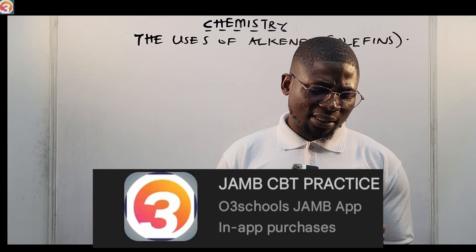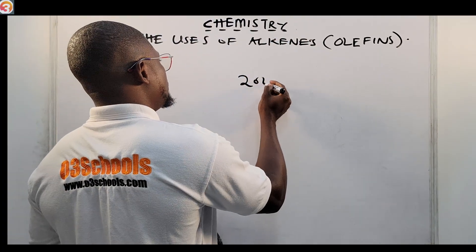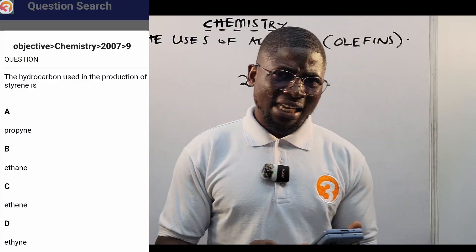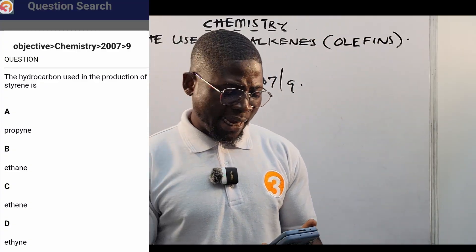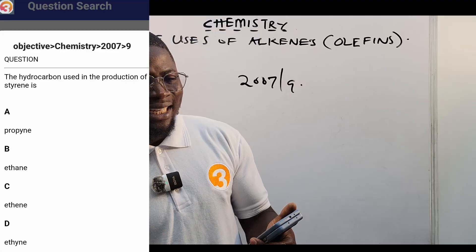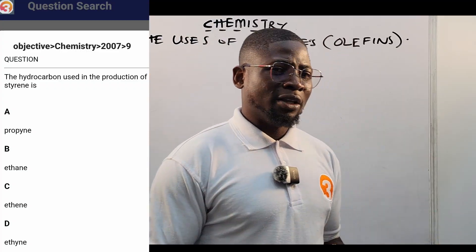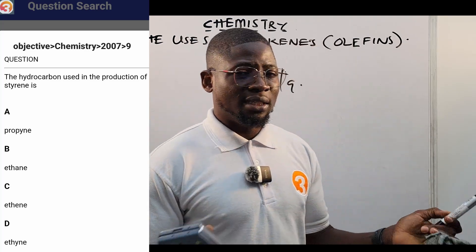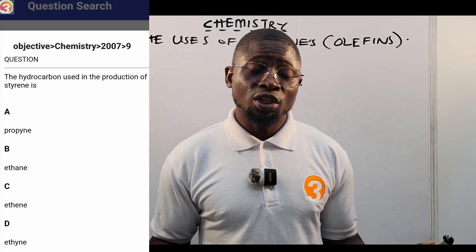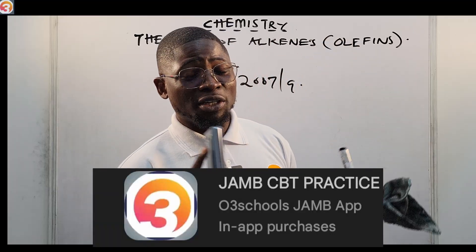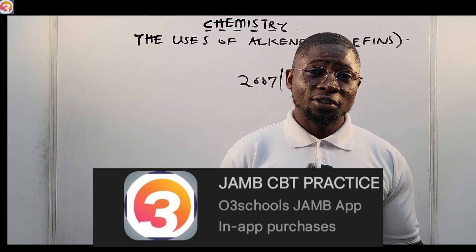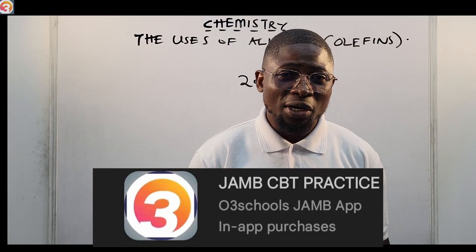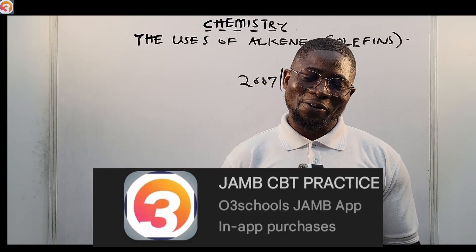Let us see a question from the app. This is a 2007 question number nine. It says: the hydrocarbon used in the production of styrene is: A) propyne, B) ethane, C) ethene, D) ethyne. I'm going to come back to this question after the class. The app has all the past questions you need, lecture notes, and a search feature where you can search for questions by topic.